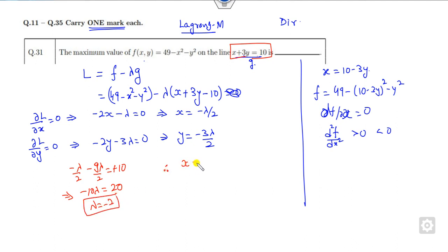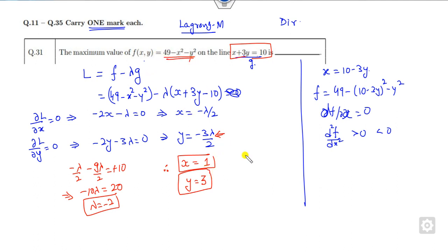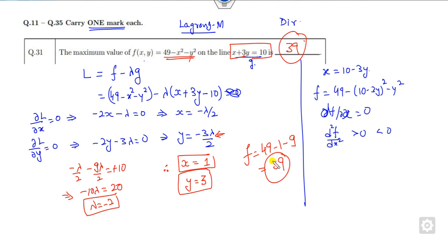With λ = −2, the value of x is 1 and y is 3. Since there is only a single critical point, this must be the maximum — no further checking is needed. Substituting: 49 − 1 − 9 = 39. So the answer is 39.